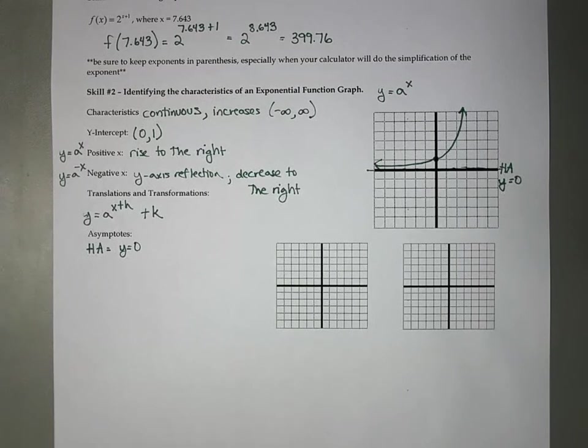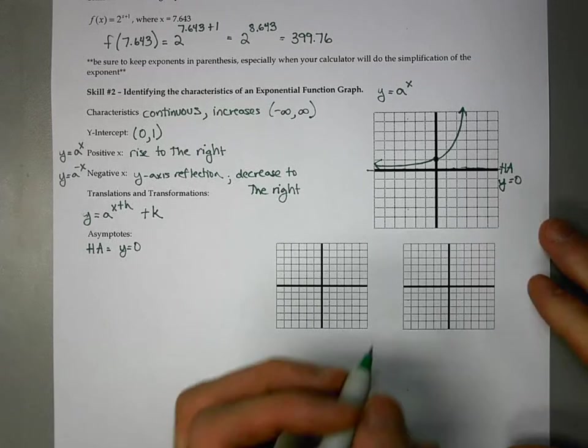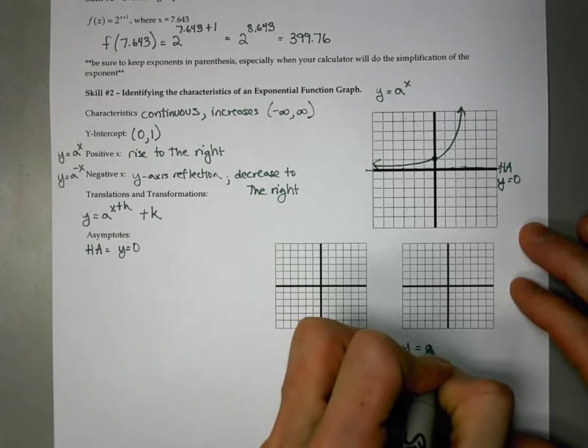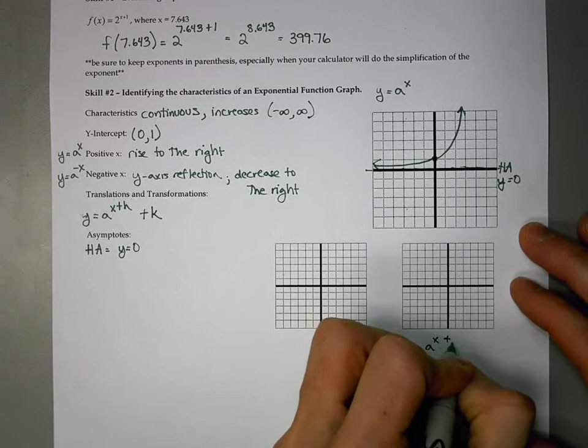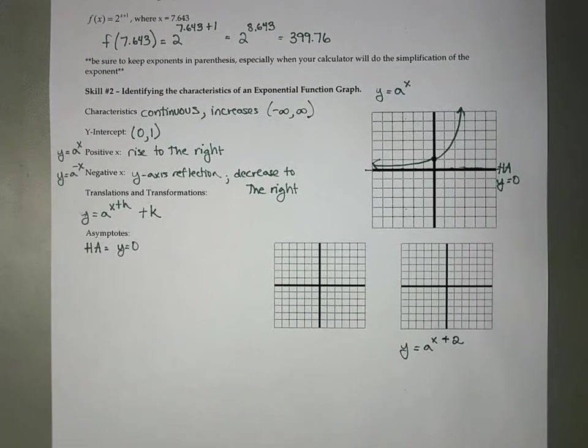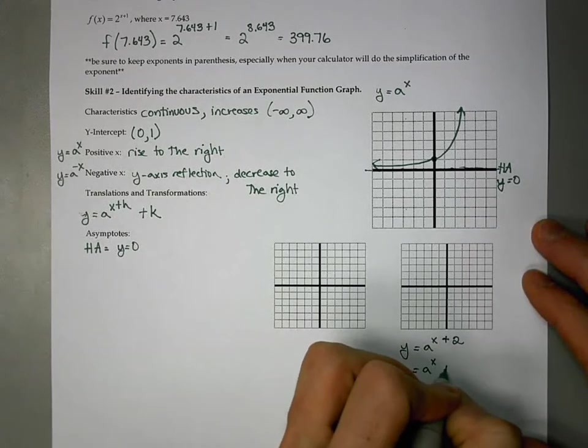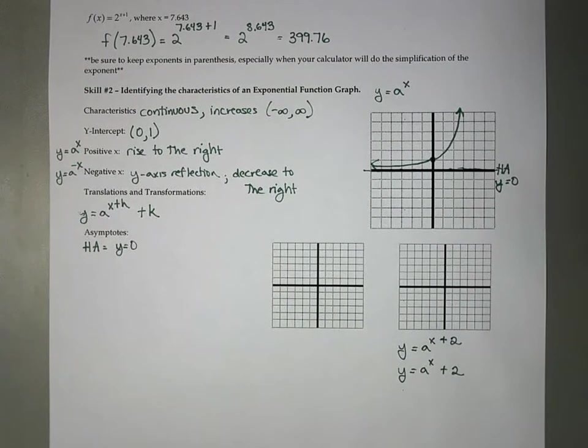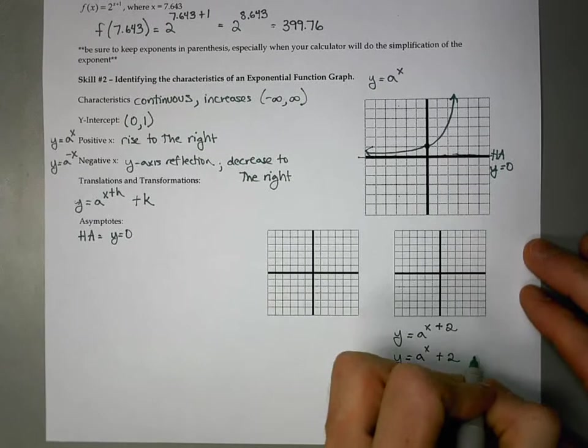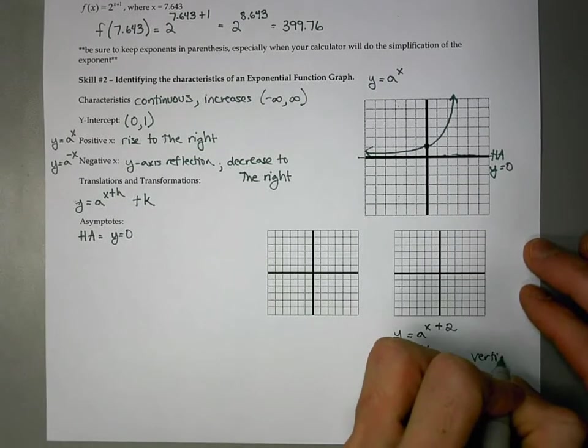But if we've got transformations, then the asymptotes and the y-intercepts are all affected by that as well. So for example, if I had y equals a to the x plus 2, that is going to be a horizontal shift. If I had y equals a to the x plus 2, where my plus 2 is in the back, that is going to be a vertical shift.